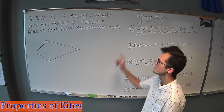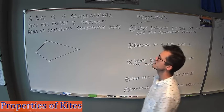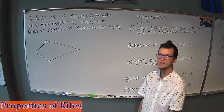What's up, team? Today we're talking about kites. Let's define it first. A kite is a quadrilateral that has exactly two distinct pairs of congruent consecutive sides. Real wordy, let's break it down.